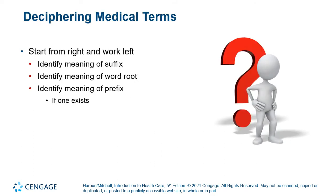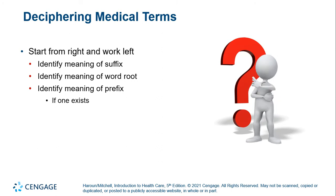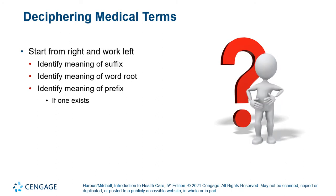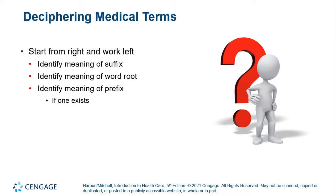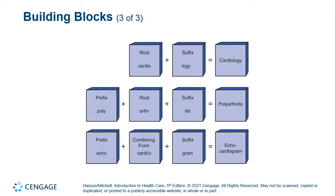What is usually advised for deciphering medical terms is to start from the right and work left — so you start with the suffix, then the root, and then the prefix. Here are some examples of these building blocks.